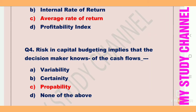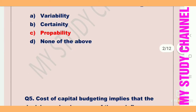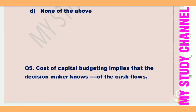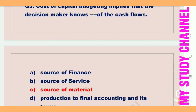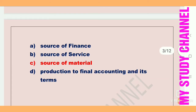Next question: cost of capital budgeting implies that the decision maker knows dash of the cash flows. Options are: A is source of finance, B is source of service, C is source of material, and D is production. Option C is the right answer — that is source of material. Cost of capital budgeting implies that the decision maker knows the source of material of the cash flows.